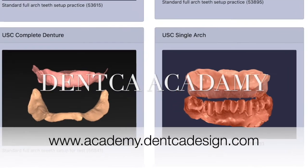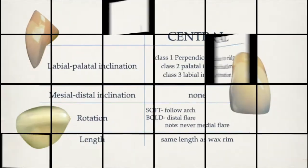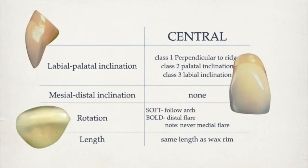You could make a login with your own information. Starting from central teeth does require specific inclination in XYZ location. Class 1, 2, or 3 jaw relationship makes the labial-palatal inclination different. Class 1 will be perpendicular to the ridge, Class 2 palatally inclined, Class 3 labially inclined.